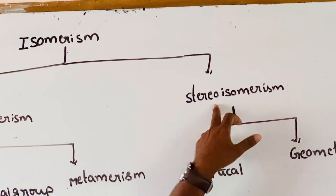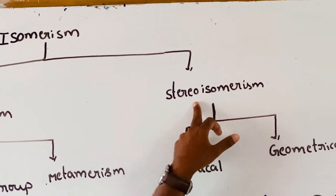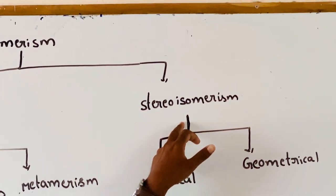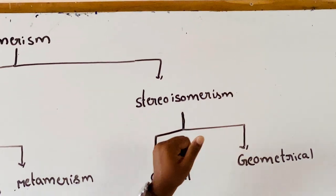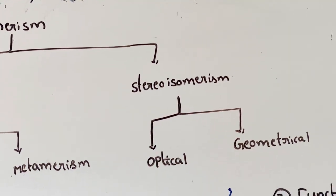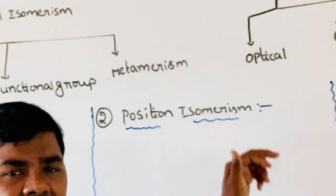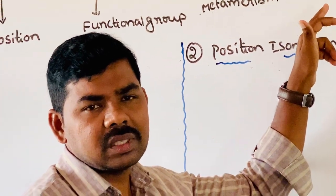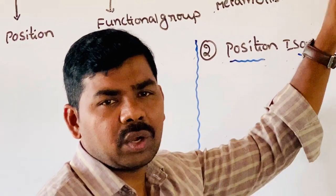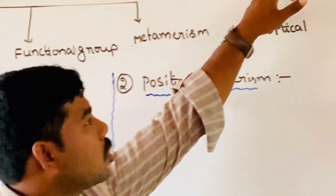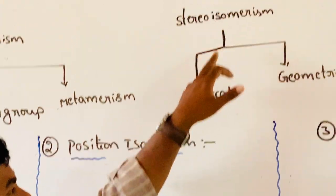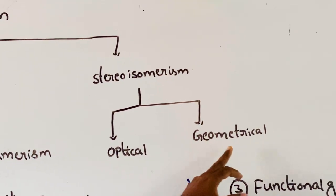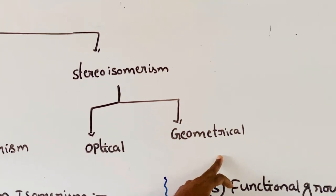Stereo isomerism. What is stereo isomerism? Molecular formula is same for two or more compounds but different arrangement of atoms or groups or molecules — this is called stereo isomerism. Stereo isomerism is mainly classified into two types: optical isomerism and geometrical isomerism.